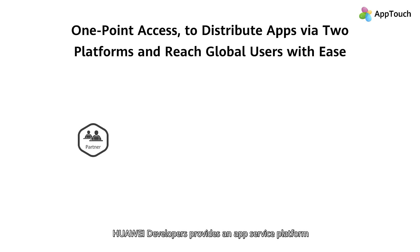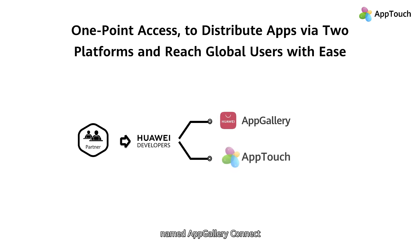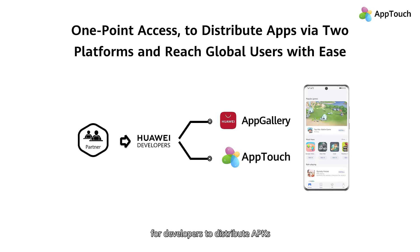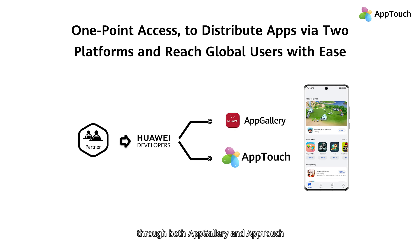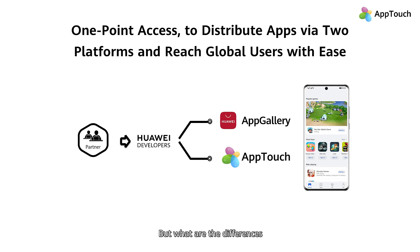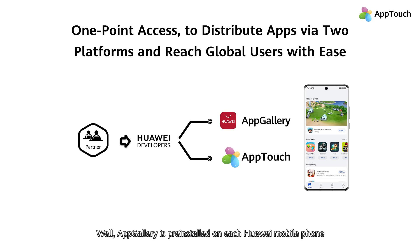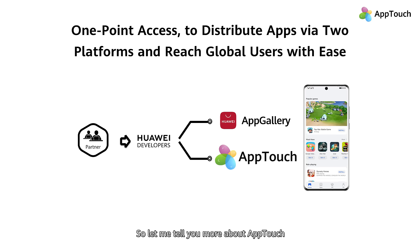Huawei Developers provides an app service platform named AppGallery Connect for developers to distribute APKs. These packages will be distributed through both AppGallery and AppTouch. But what are the differences between AppGallery and AppTouch? Well, AppGallery is pre-installed on each Huawei mobile phone. So let me tell you more about AppTouch. Simply put, it distributes apps to app stores on a range of devices of many different brands.